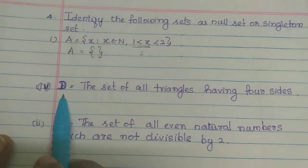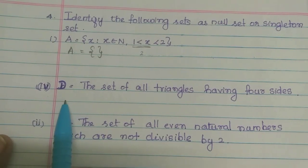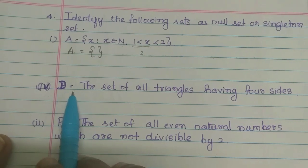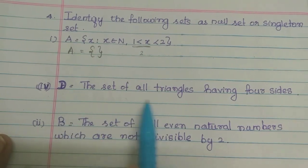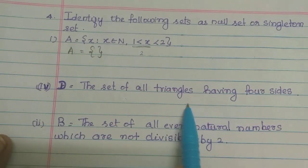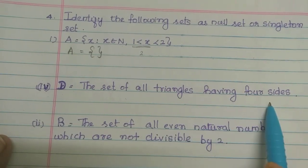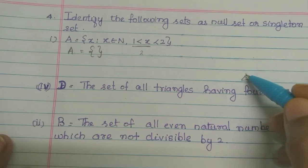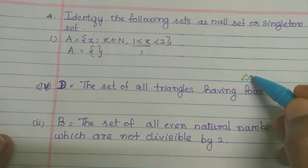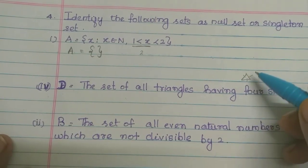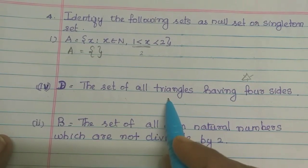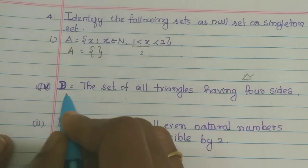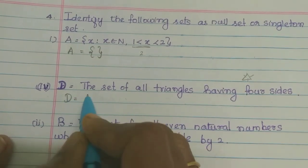Now the 4th sum: D is equal to the set of all triangles having 4 sides. Since we know that a triangle has only 3 sides, having 4 sides is not possible. Therefore, D is equal to Null Set.